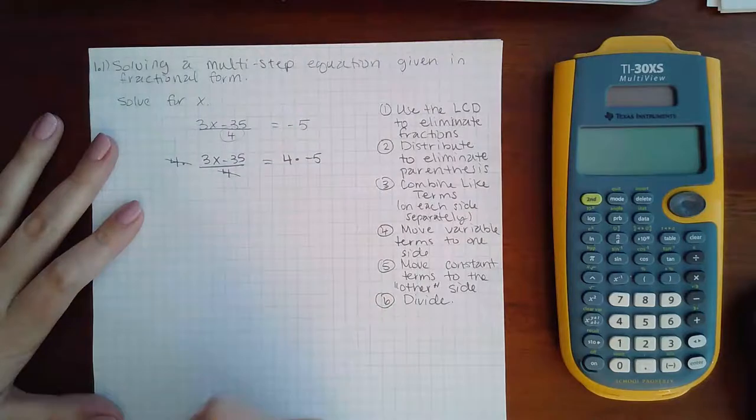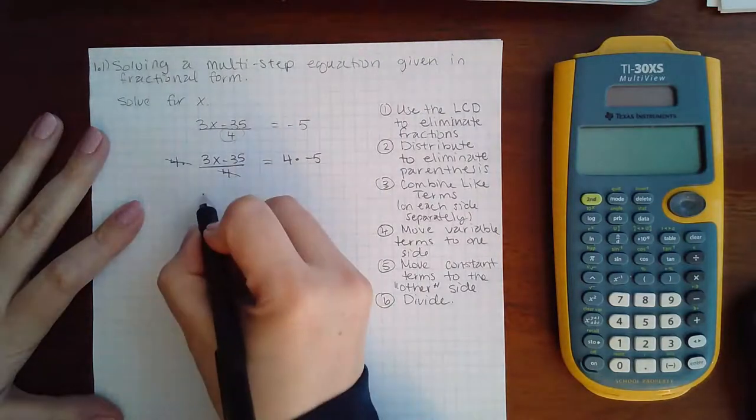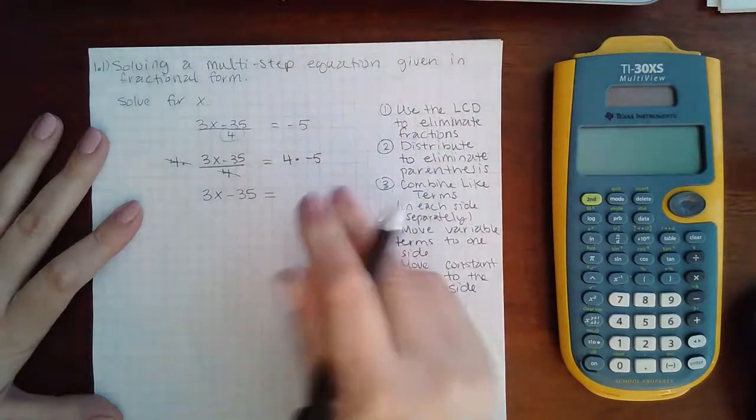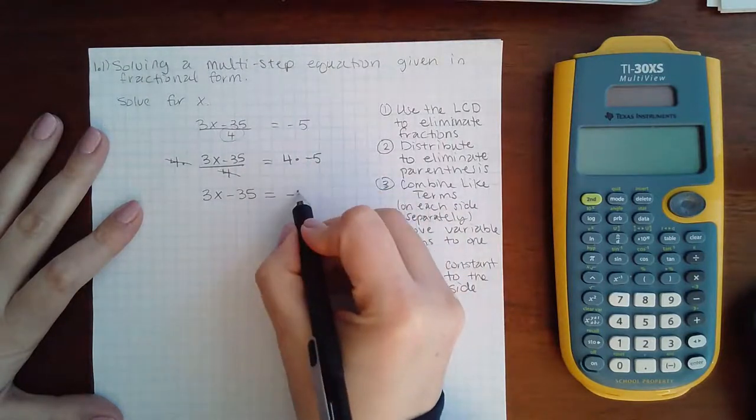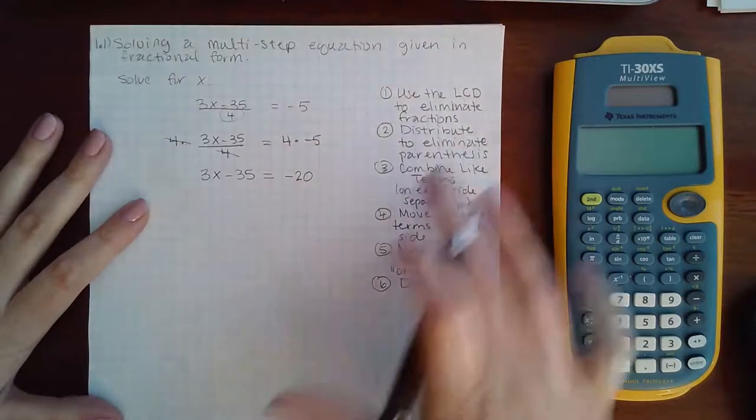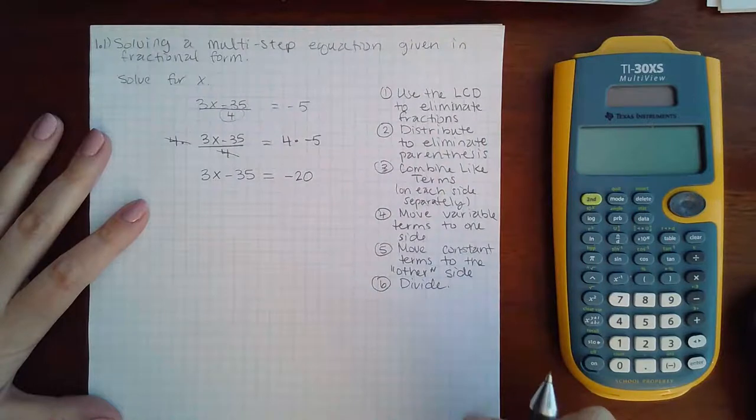So here, the four is going to eliminate the fraction, leaving me with just 3x minus 35. And over here on the right side, I can actually multiply four times negative five, and it is negative 20. So I have used the LCD to eliminate the fractions.